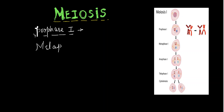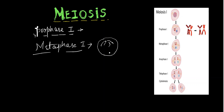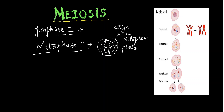The chromosomes move to the metaphase plate. In Metaphase 1, as shown in the diagram, all the homologous chromosomes attach to spindle fibres and are aligned on the metaphase plate.